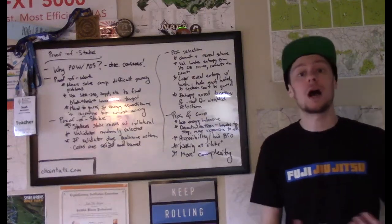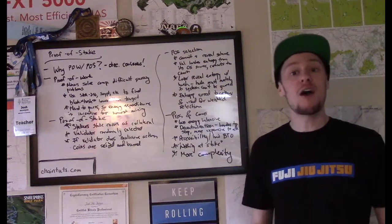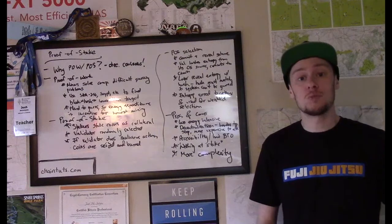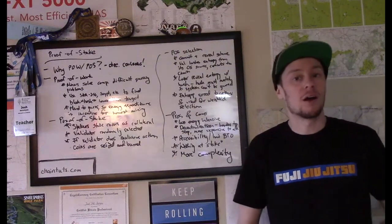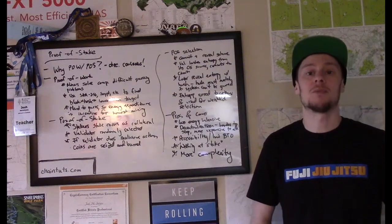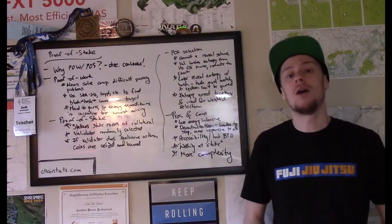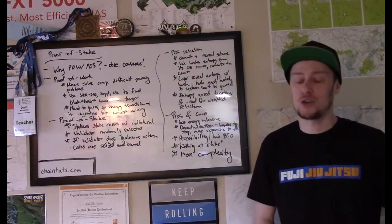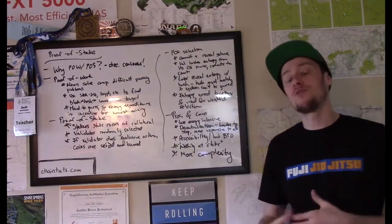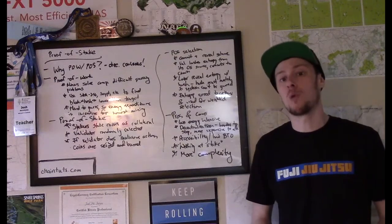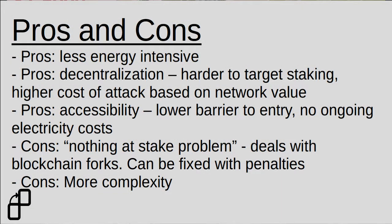There are pros and cons to proof of stake, just as there are with proof of work. I encourage everyone to learn about these systems and determine what you think is the better validation mechanism. One of the pros is that proof of stake is much less energy intensive than proof of work mining. With Bitcoin especially, enormous amounts of electricity are spent validating blocks. There are legitimate environmental concerns and concerns about power consumption, especially in areas where the grid may not be built to handle the demands we place on it in day-to-day life.